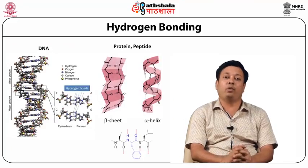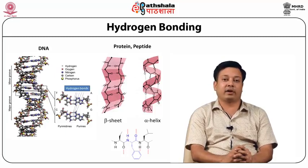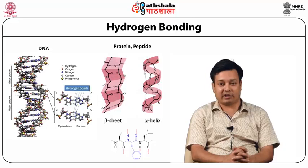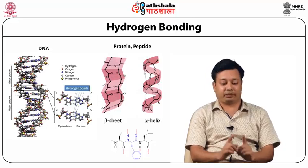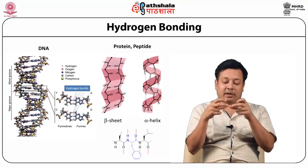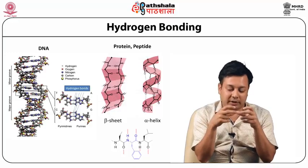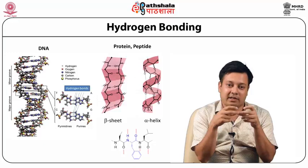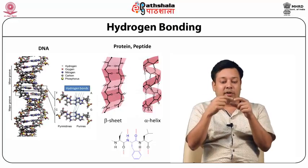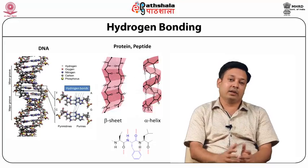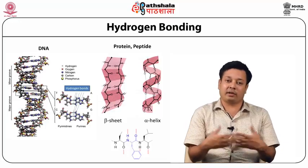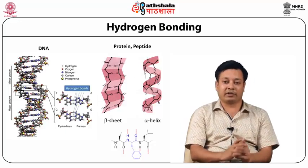Hydrogen bonding is a very important non-covalent interaction, very prevalent in various biomolecules. In the DNA double helical structure, the sugar backbone runs along and the bases are inside the core of the polynucleotide. A and T base pairs form double hydrogen bonding, while G and C — guanine and cytosine — form a triple hydrogen bonding array. It is hydrogen bonding that stabilizes the DNA. When we melt DNA, we rupture the hydrogen bonding, but since this non-covalent interaction is reversible, it comes back.